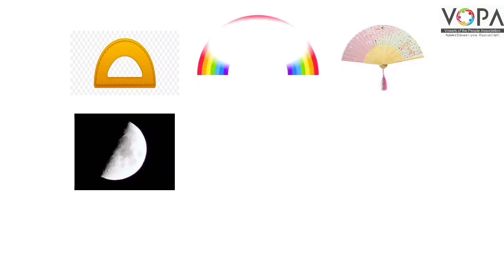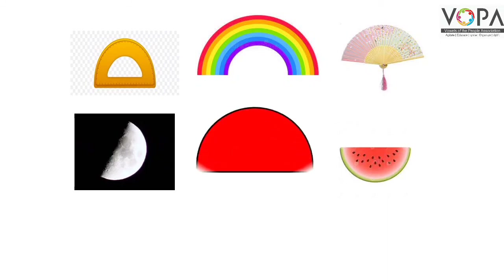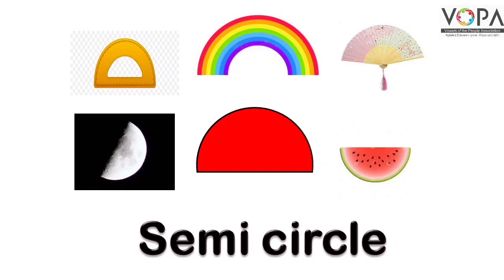इन तसाविर को देखिए बच्चों। इन तसाविर में जो shapes नजर आ रहे हैं, जो शकलें नजर आ रही हैं, वो semi-circle की तरह हैं। ये पूरा circle नहीं है बल्कि आधा circle है, semi-circle है। तो ये सारे shapes कैसे हुए? Semi-circle।